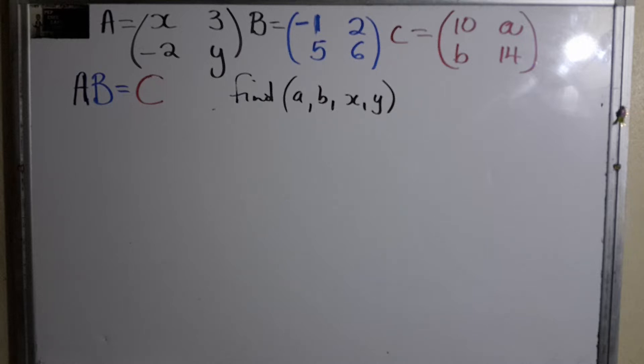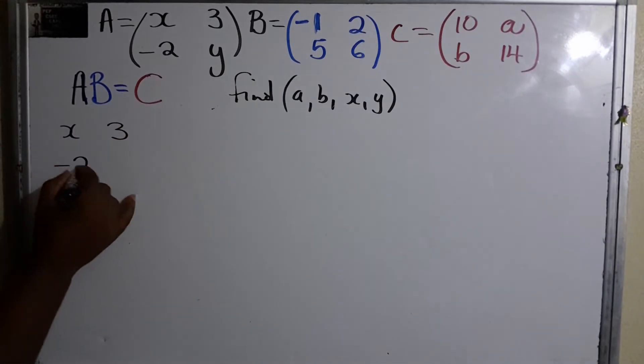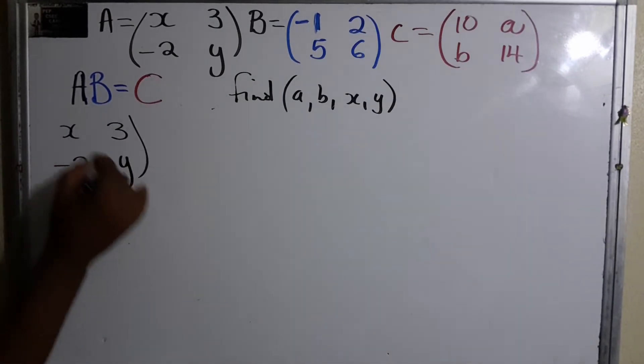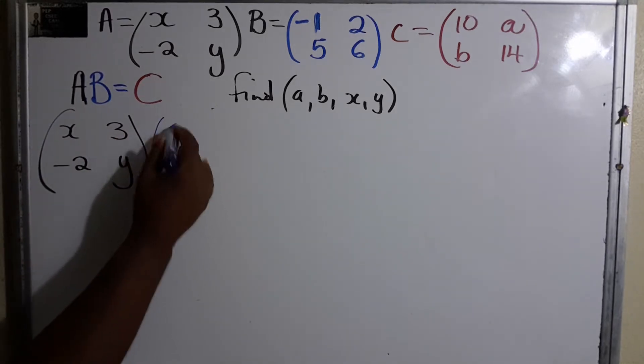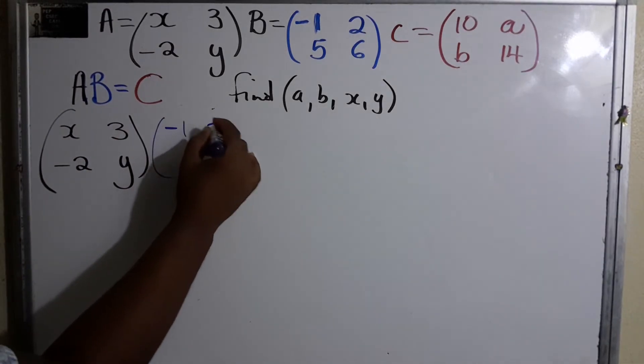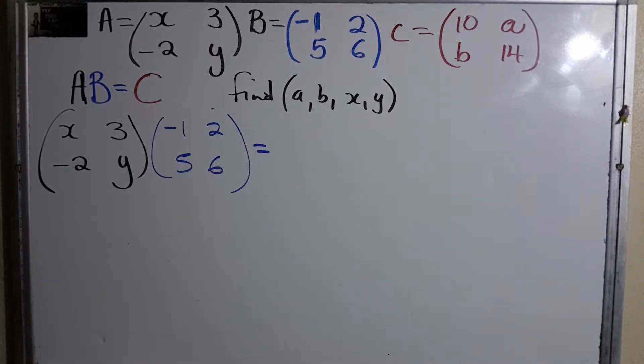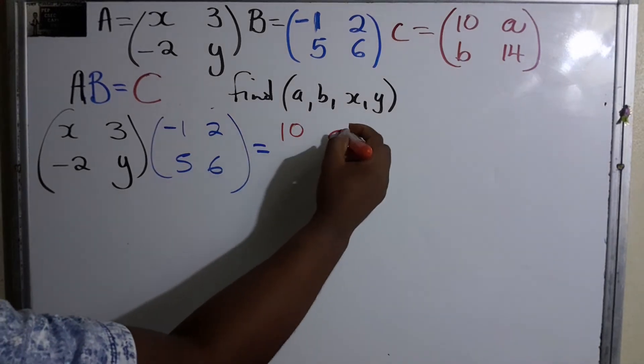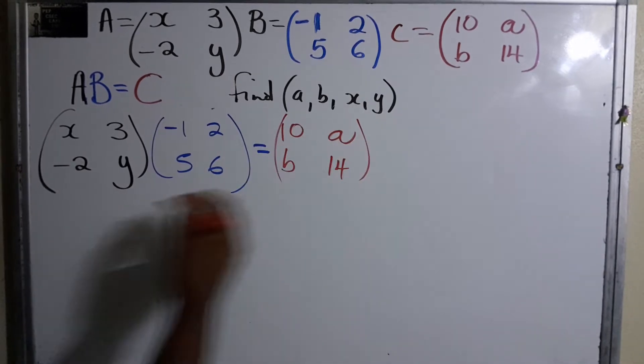Let's go. So AB means A times B. We just write back A, which is (x, 3; -2, y), and we're gonna times it by B, which is (-1, 2; 5, 6). And of course we're gonna equate that to C, which is (10, a; b, 14).